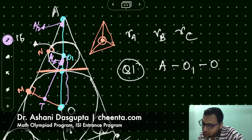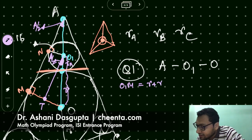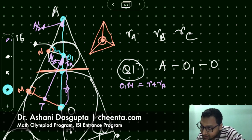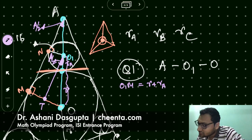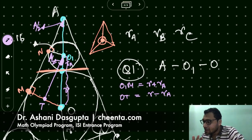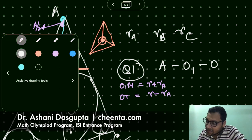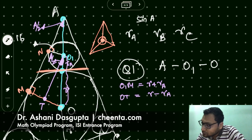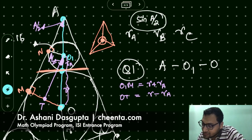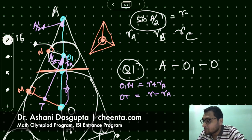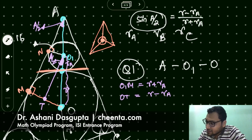So what is this particular length? This length, O1M. O1M is R plus RA. That is the length of the small radius plus the length of the large radius. And what is OT? OT is R minus RA. Remember, this is RA. So this is also RA. This is a rectangle. So OT is R minus RA.